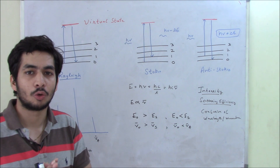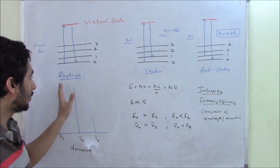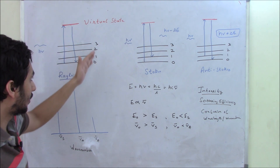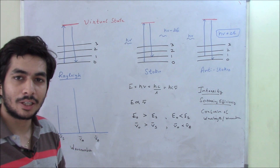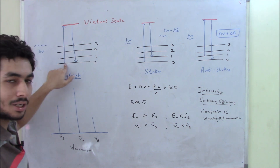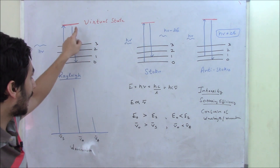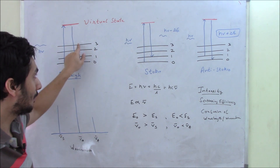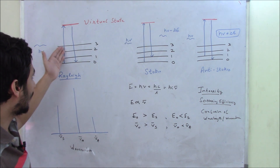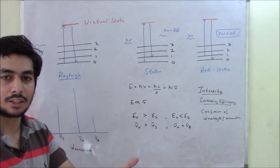Before that, let's discuss Raman Spectroscopy in detail. Let's assume these are the vibrational energy levels. For Rayleigh scattering, or elastic scattering, if we have a photon of frequency ν, the molecule interacts with that frequency but does not absorb it — it merely scatters it. The photon takes the molecule from the ground state to a virtual state, which is very short-lived, and if it returns to the same energy level, it emits the same photon hν. That's Rayleigh or elastic scattering.